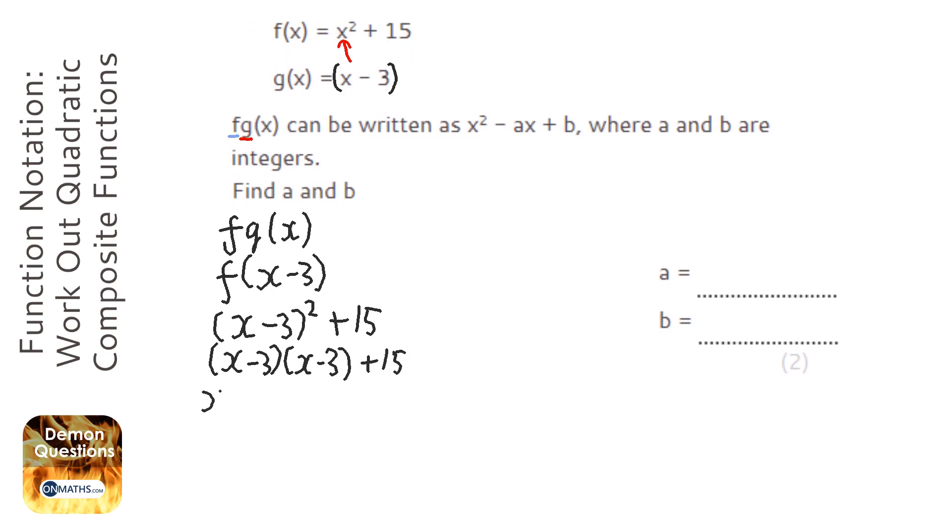We're going to end up with x squared minus 6x plus 9, and then the plus 15 on the outside. So we put those together, and we've got plus 24.